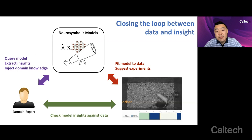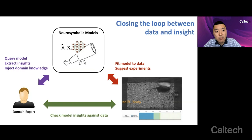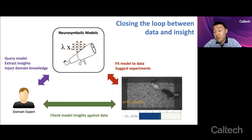Ultimately, once we have these Neurosymbolic models, the goal is to use these as a tool to empower closing the loop between data and insight. So on the one hand, you have a domain expert that can interact with these Neurosymbolic models in a transparent way, both in terms of querying the learned models and extracting the insights, but also injecting more domain knowledge to constrain the model in useful ways. You have the Neurosymbolic learning algorithms that can train these models.